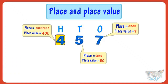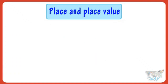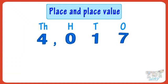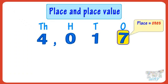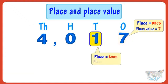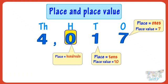So kids, let's take another example. Here we have another number. Place value of 1 is 1 ten, that is 10. Place of 0 is hundreds. And place value is 0 hundred or 0.